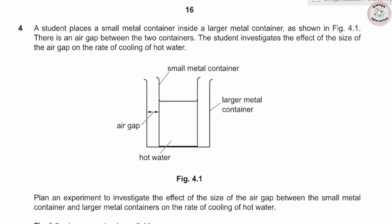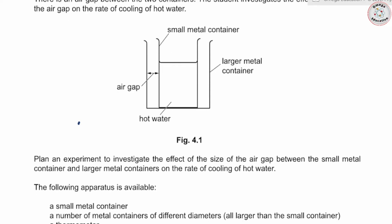A student places a small metal container inside a large metal container, as shown in figure 4.1. This is a small metal container which contains liquid, and outside you have a large metal container — a box-in-a-box situation. There is an air gap between the two containers. The student investigates the effect of the size of the air gap on the rate of cooling of hot water. The question asks you to plan an experiment to investigate the effect of the air gap size on the rate of cooling.